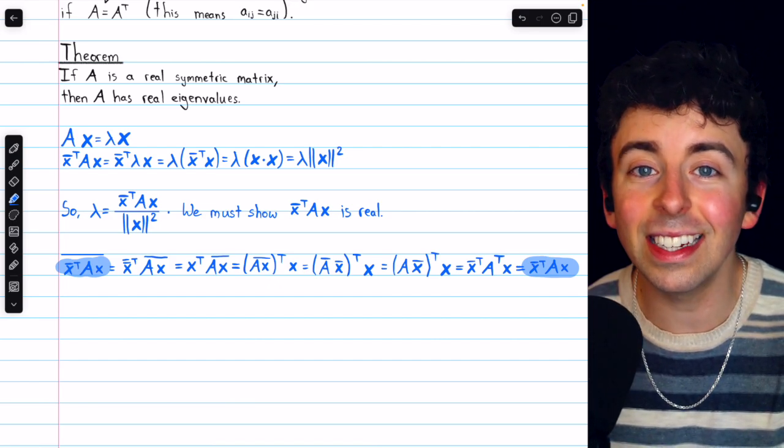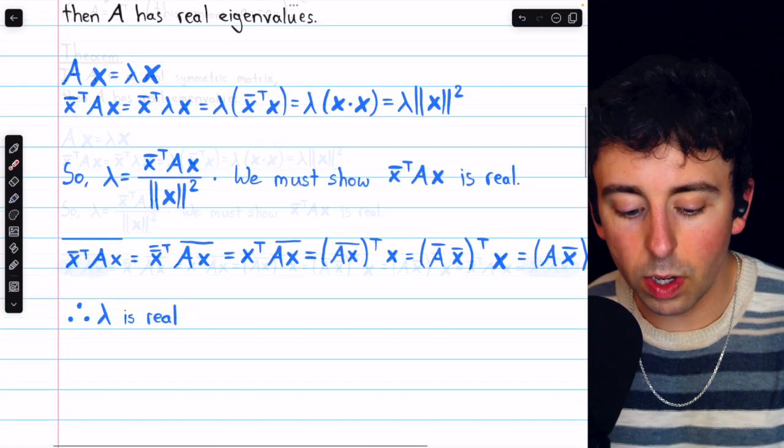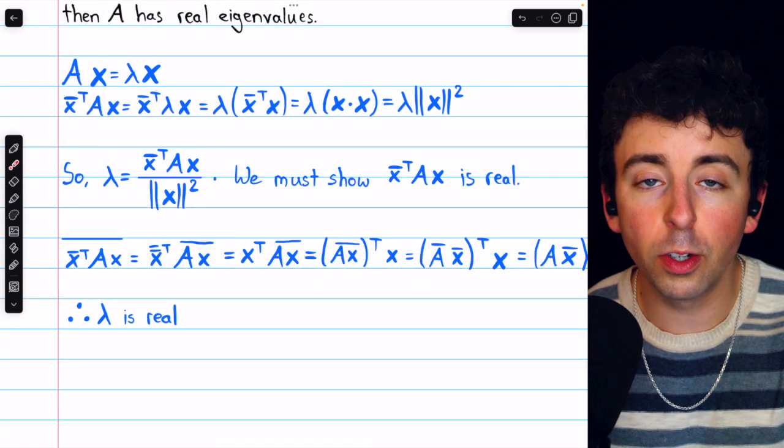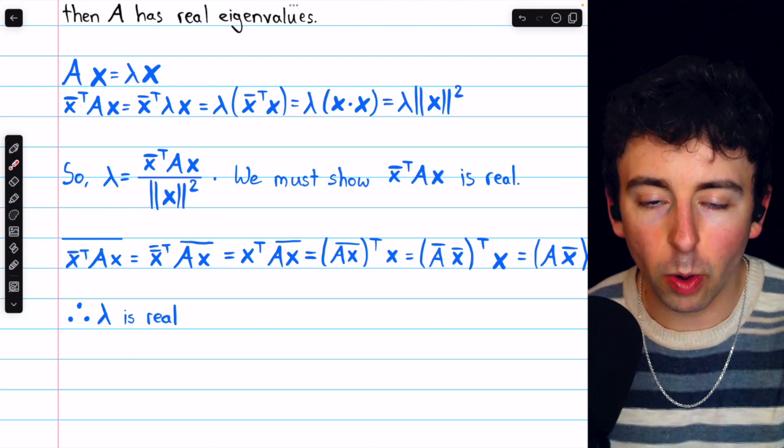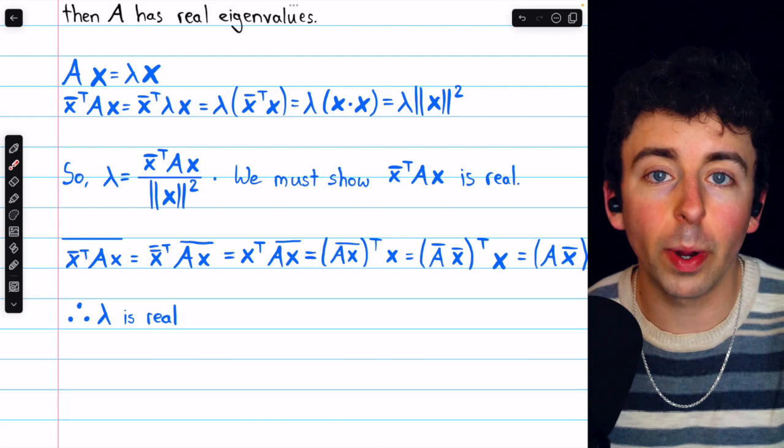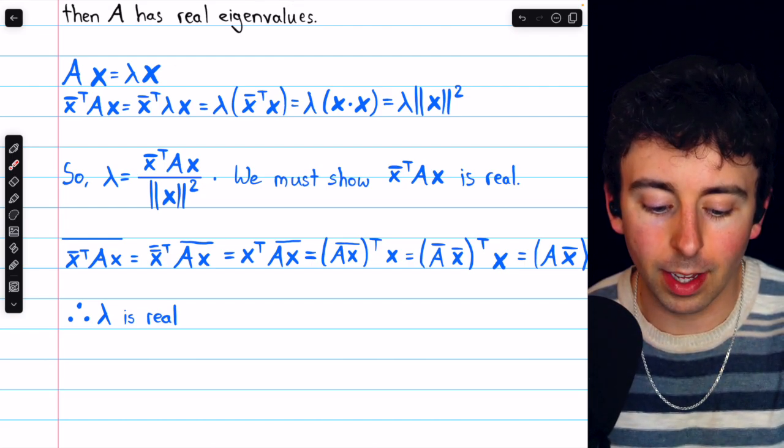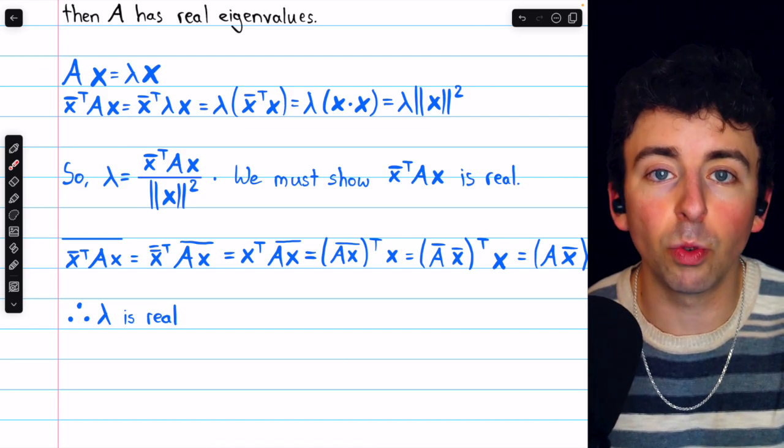So taking the conjugate of the whole thing didn't change it. Hence, it must be a real number. So we've shown that the eigenvalue lambda is a quotient of two things. The denominator, we know, is real. And we just showed that the numerator is real by showing that taking the conjugate didn't change it. Since lambda is a quotient of real numbers, lambda must be real as well.